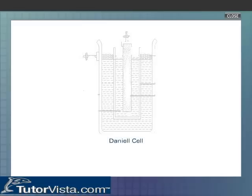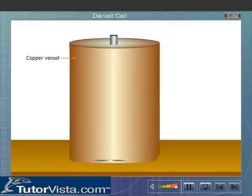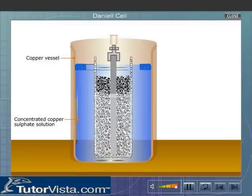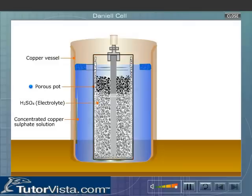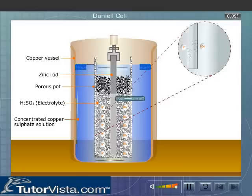The Daniel cell consists of a copper vessel containing a concentrated solution of copper sulfate. Inside the copper vessel is a porous pot filled with dilute sulfuric acid, which acts as an electrolyte. An amalgamated zinc rod is placed in the center of the porous pot.